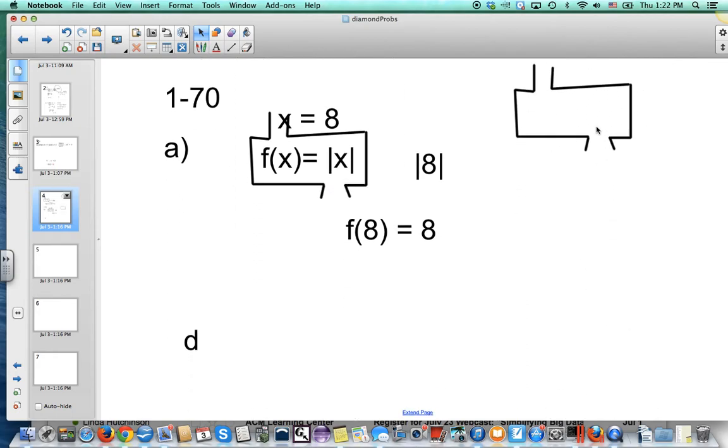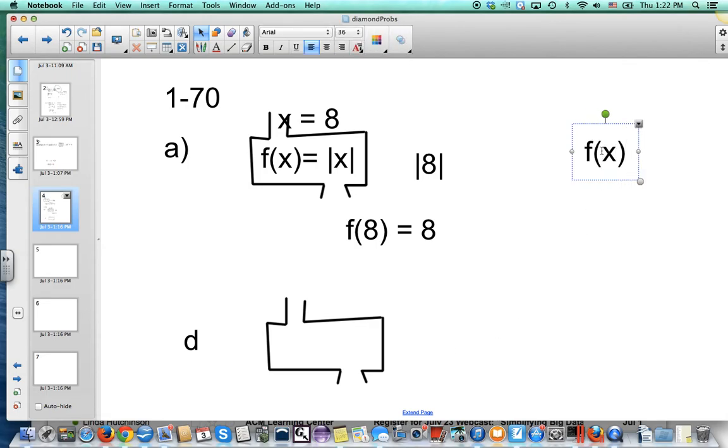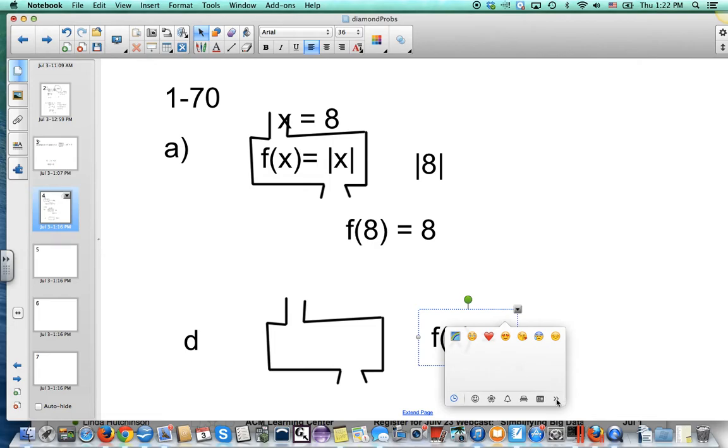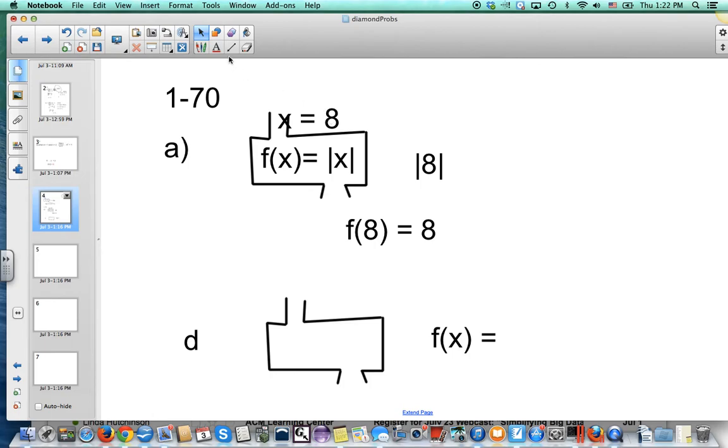This function machine is called square root of x minus 5. They're still calling it f(x), and it takes just one number in. What it does is take the square root of that number minus 5.